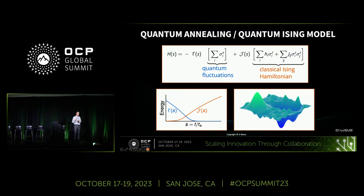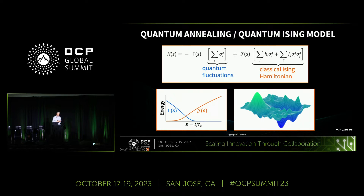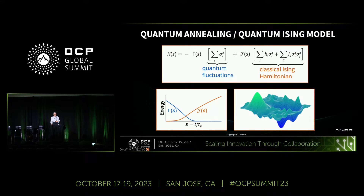You imagine you had a dimmer switch and could gradually tune down that delocalizing term and amplify the problem statement already programmed onto the chip. This is quantum annealing — it's inspired by the adiabatic theorem in quantum mechanics. It preferentially selects out from that large superposition either the best possible answer, the lowest energy answer, or a low energy answer that's still very good. That, at a high level, is the picture of annealing quantum computing.